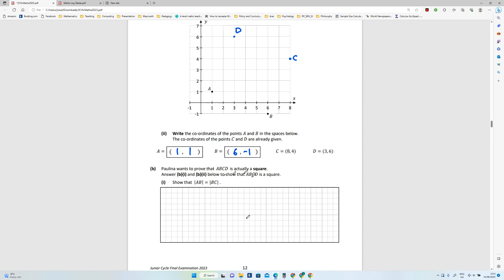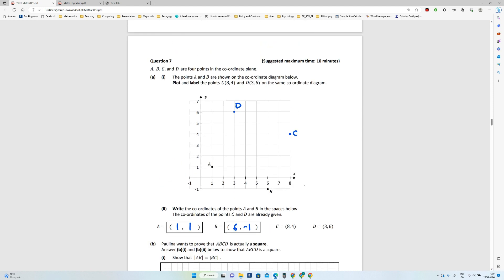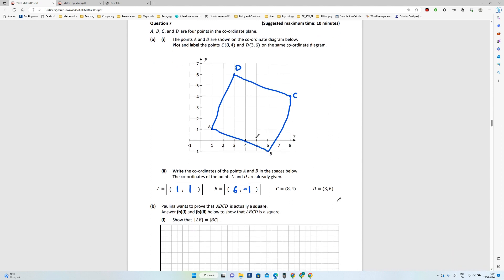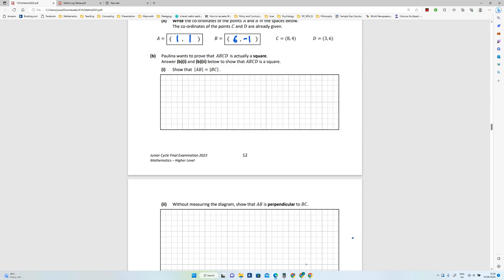Part B. Pauline wants to prove that ABC is actually a square. Now if I draw lines here, you could do this with a ruler. I've done this pretty badly, but you could kind of get an intuition that it probably is a square just looking at there. Now to prove it...